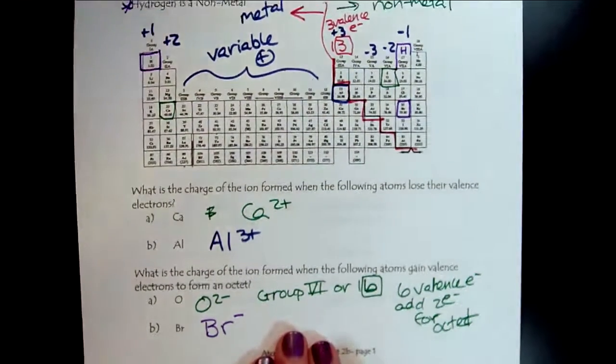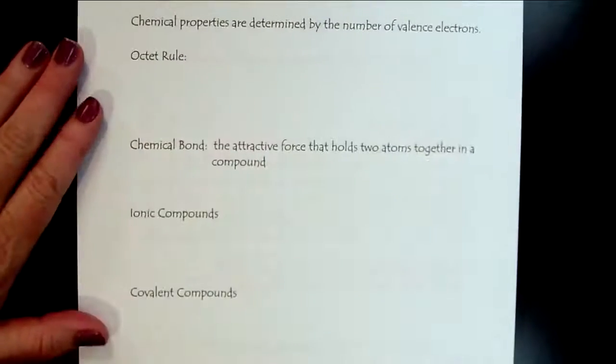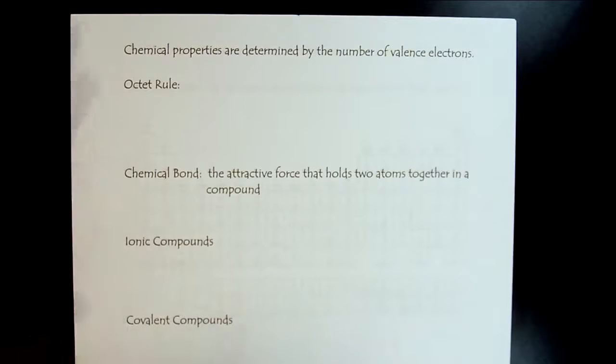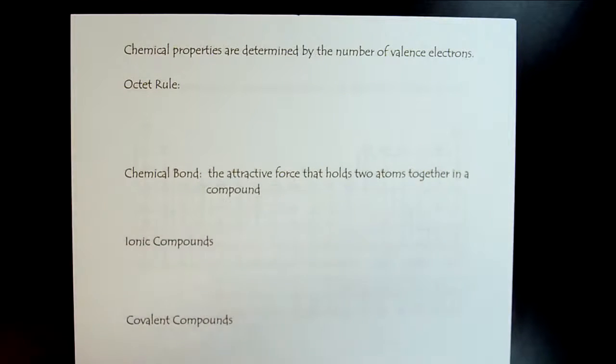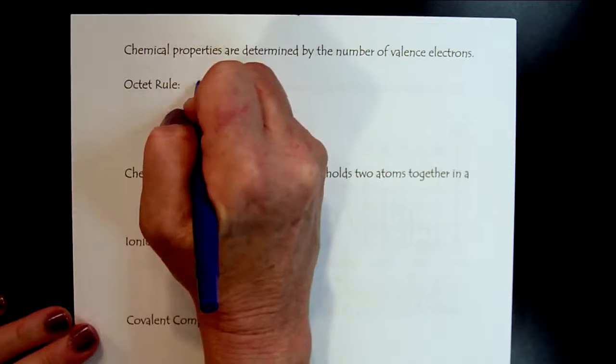Let's look a little more closely at this. We can see now how the chemical properties are determined by the number of valence electrons. So that's the octet rule.